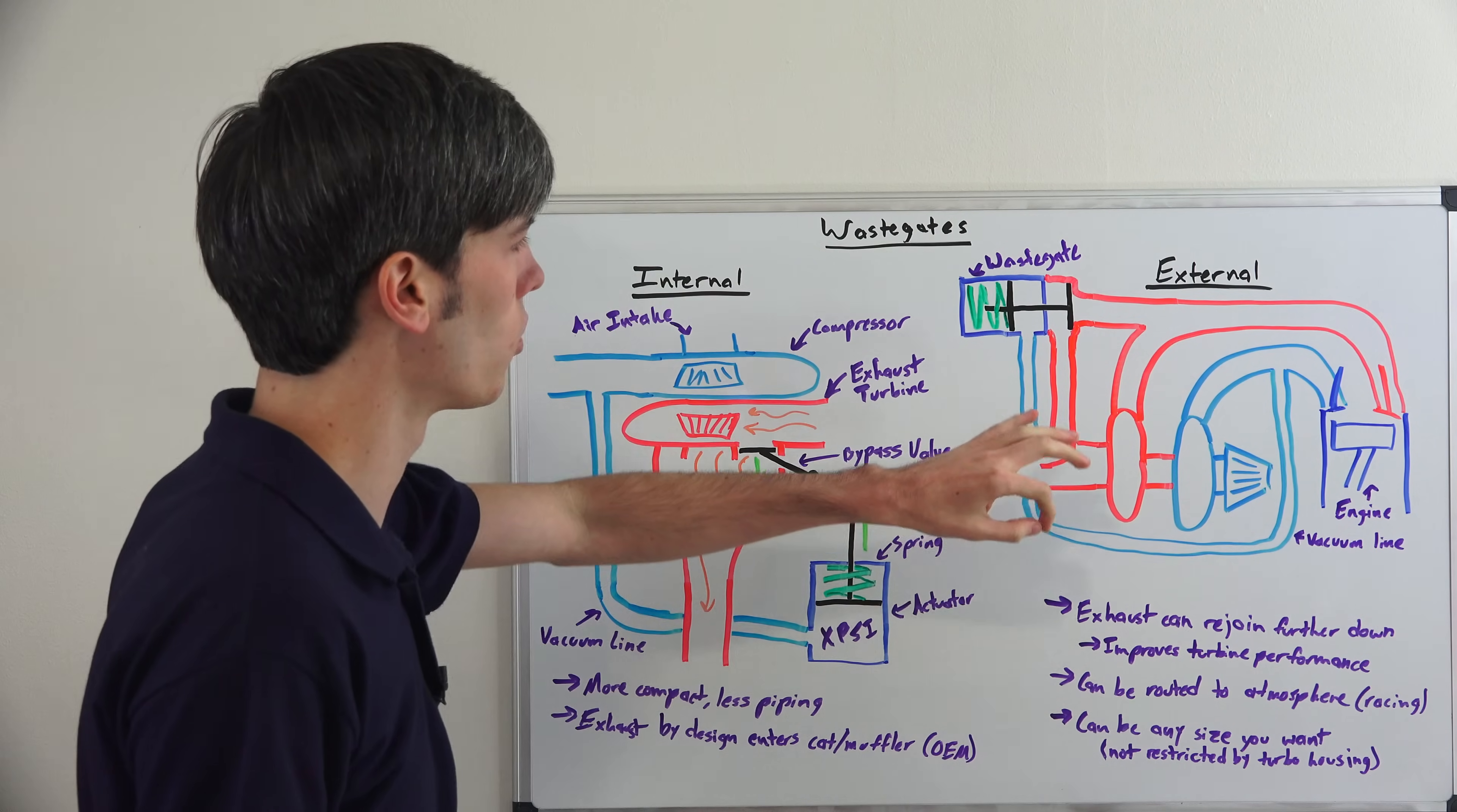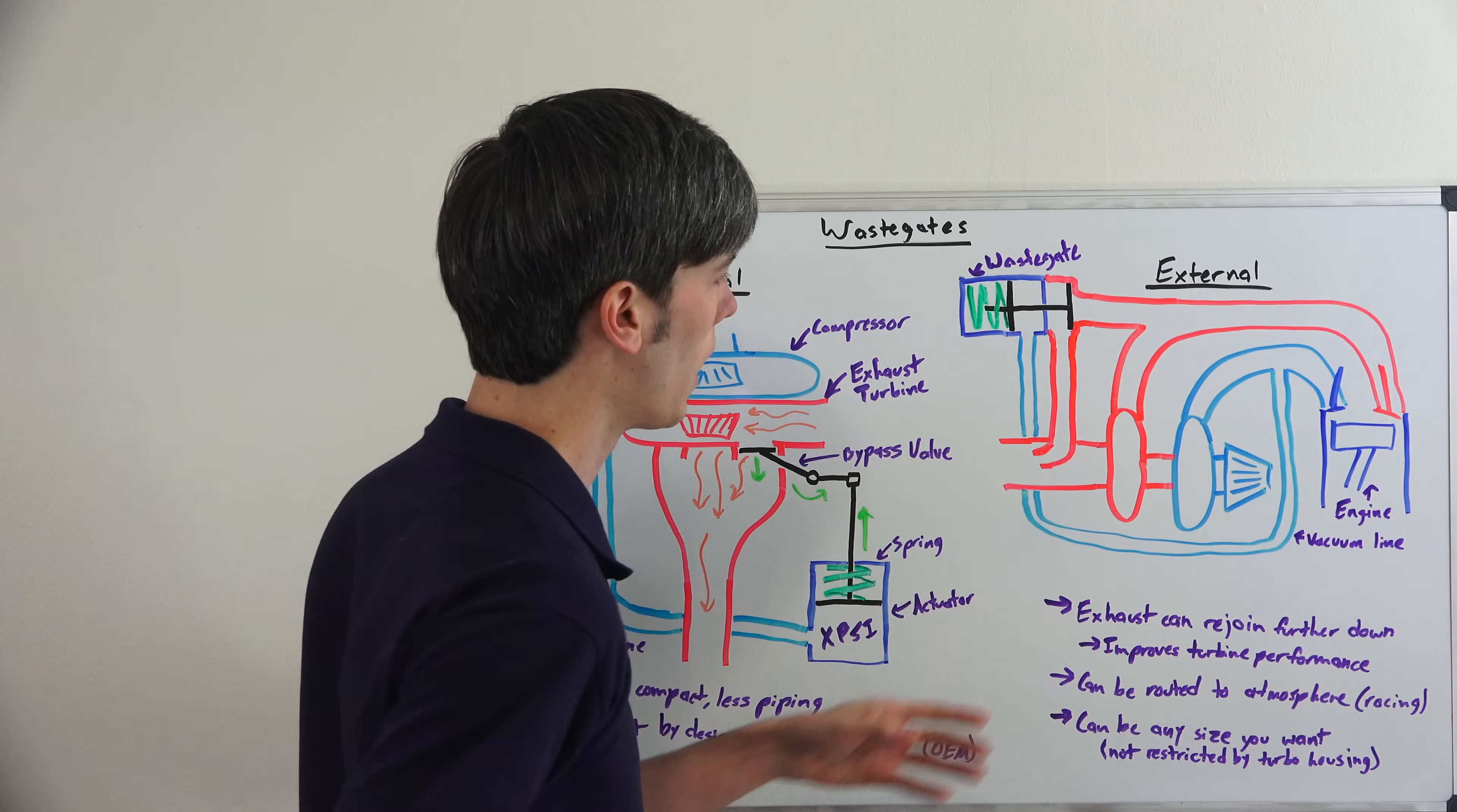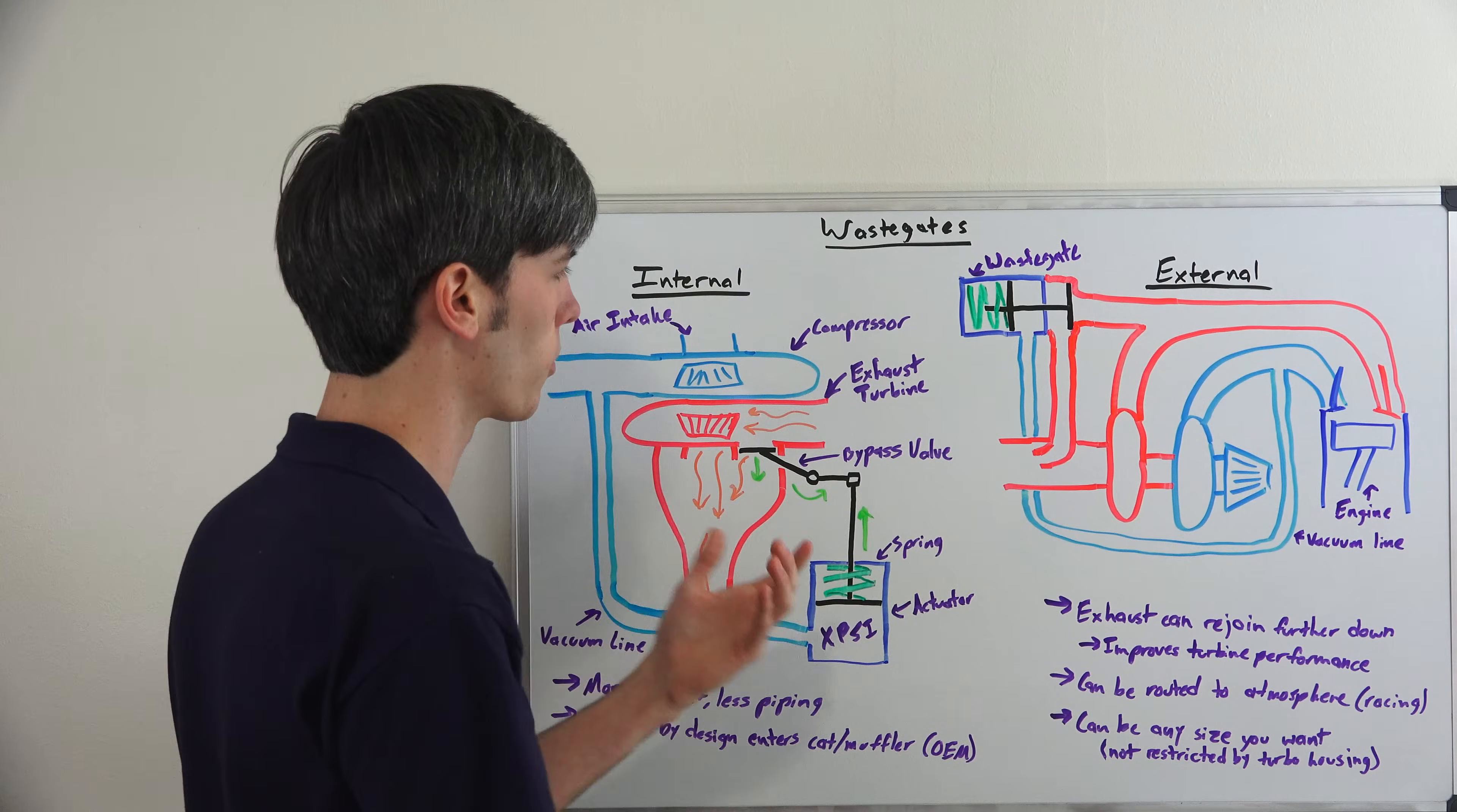Now let's move on to external wastegates. So here we have our example, we've got our engine here with our turbocharger, the inlet side and the exhaust side. So as it pulls in air, you get to a certain point and the only difference really here is that this wastegate is not within the turbo housing.